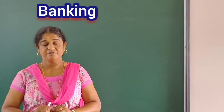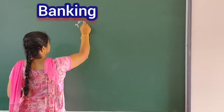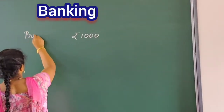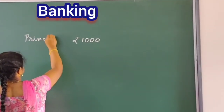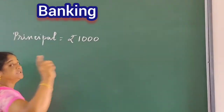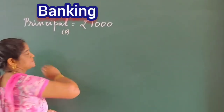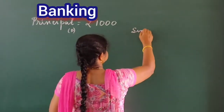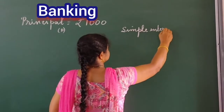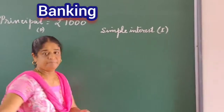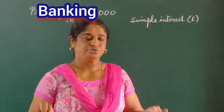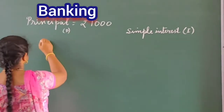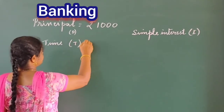Now, the money we deposit in the bank — for example, I deposit rupees 1000 in the bank — this money that I have deposited is called the principal, represented by the letter P. And the money the bank gives us is nothing but the simple interest, denoted by the letter I. We can give the money in the bank for one year, two years, three years — any amount of time. The time for which we deposit the money in the bank is called the time, represented by the letter T.